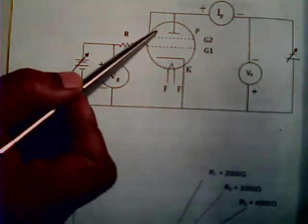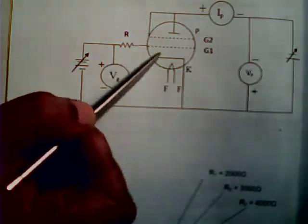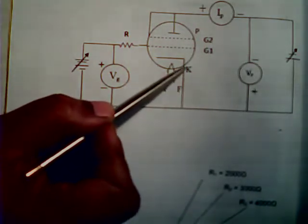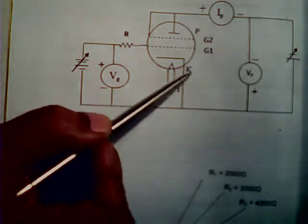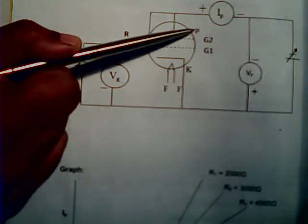What you have is basically something called a pentode, which is shown here. It has a cathode which is marked as K, and then it has a plate P, which is basically this particular part.